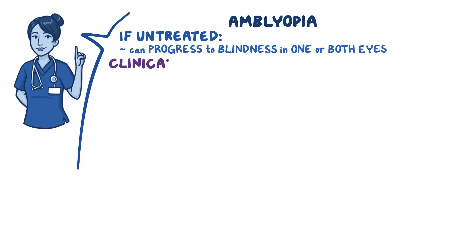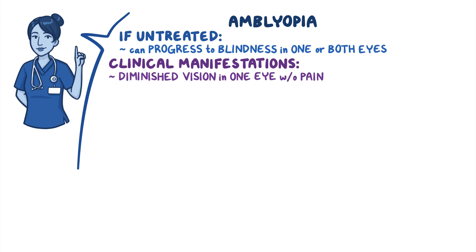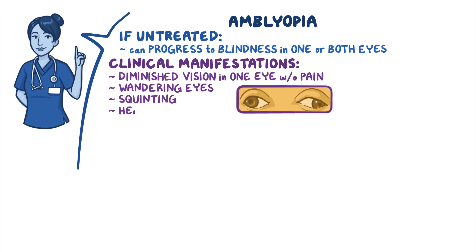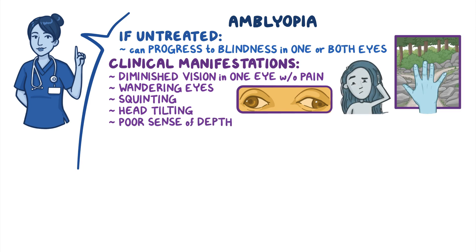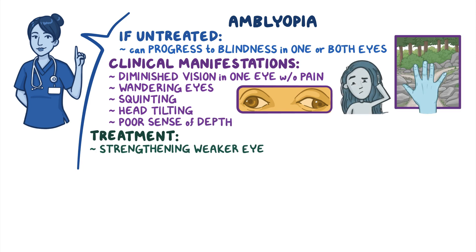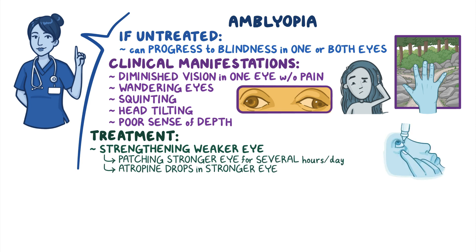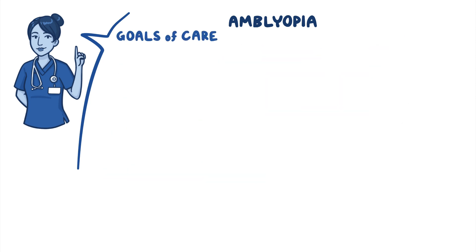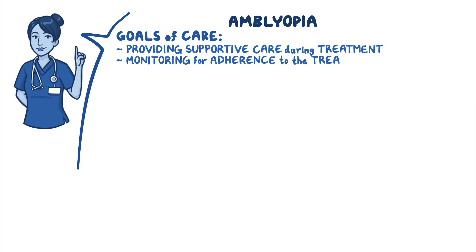Typical clinical manifestations include diminished vision in one eye without pain, as well as wandering eyes, squinting, head tilting, and a poor sense of depth. Treatment is geared at strengthening the weaker eye, which can be done by patching the stronger eye, using atropine drops, or correcting the underlying cause. Priority nursing goals include providing supportive care during treatment and monitoring for adherence to the treatment plan.